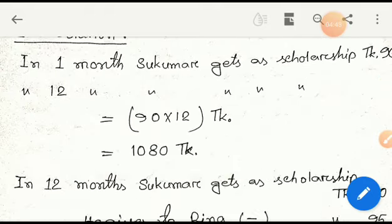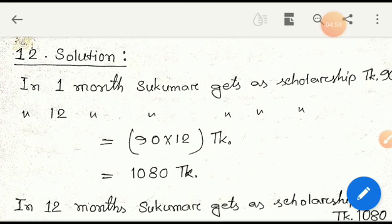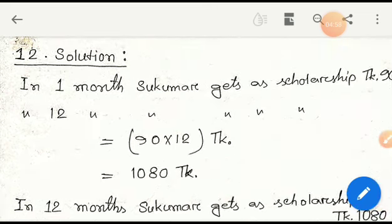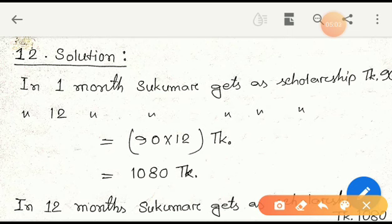Okay, follow the next question, question number 12. At first, we have to read out this question, okay? Next: Shukumar gets taka 90 per month as a scholarship. He gave Rina taka 95 from his 12 months scholarship. At first, we have to find out 12 months.